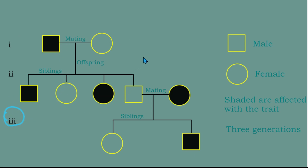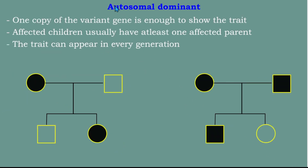Next, let me explain autosomal dominant. In human karyotype, autosomes are chromosomes 1 to 22. Autosomal dominant traits are found only on autosomes — not on sex chromosomes or gonosomes. One copy of the variant gene is enough to show the trait.